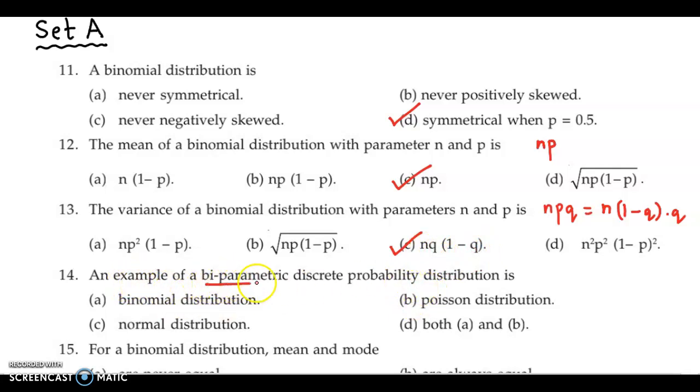Next, an example of biparametric discrete probability distribution. Now binomial distribution is a biparametric discrete distribution.